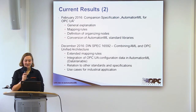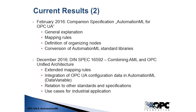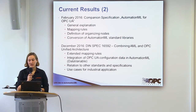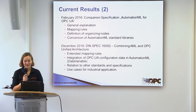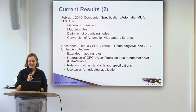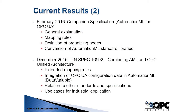These two results handle: the companion specification provides a general explanation of this combination and mapping rules for transforming AutomationML models into OPC UA information models. There are organizing nodes defined in the address space of aggregating servers which combine both standards, and we have the conversion of the AutomationML standard libraries. The DIN SPEC 16592 extends the existing mapping rules with more detailed rules, integrates OPC UA configuration data in AutomationML models by the concept of data variables, and relates the combination to other standards and specifications.